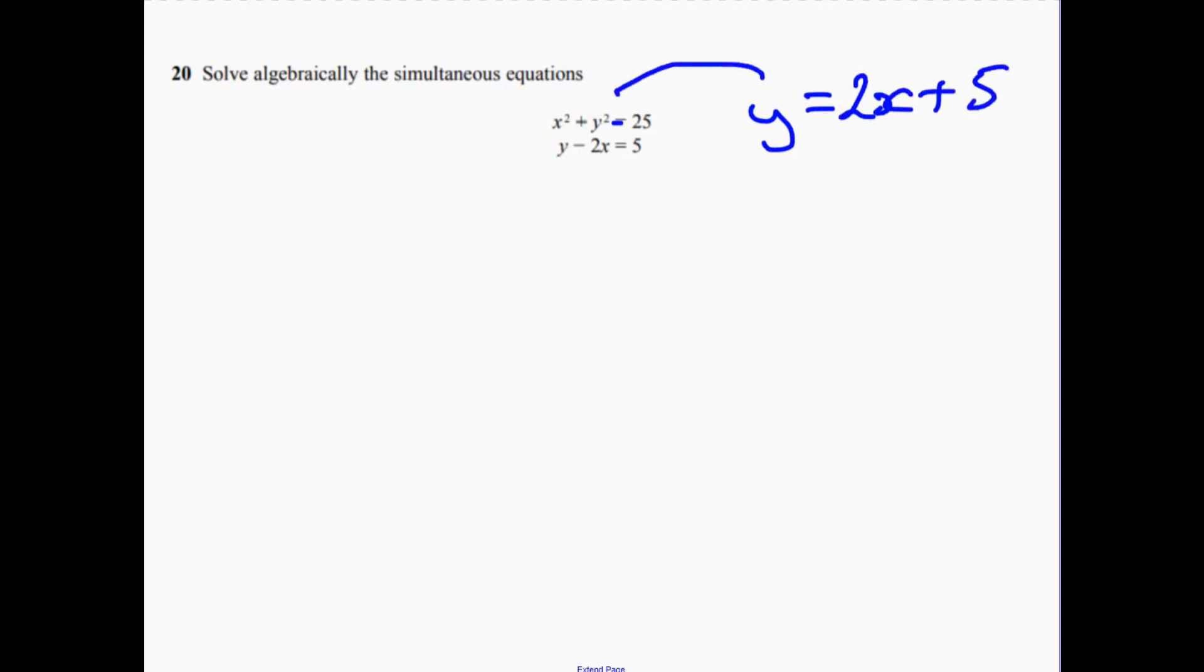Then just parachute it and replace the y there. So then we get x squared. We've managed to get something that we don't want it containing x and y. We just want it to contain one letter. So we've got y squared, well y is this, so we've got 2x plus 5 squared, and we know that equals 25.